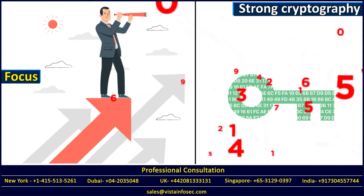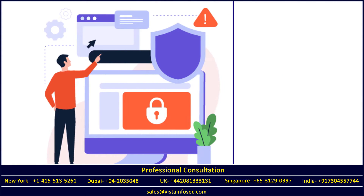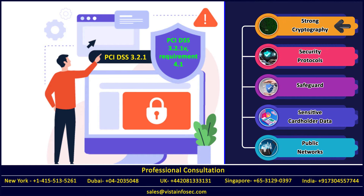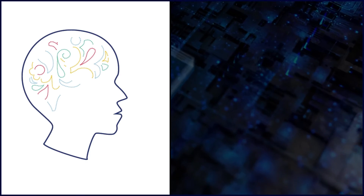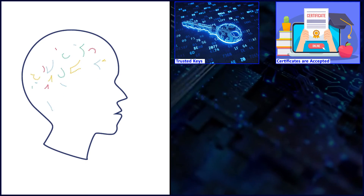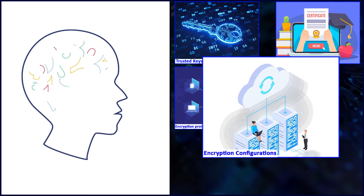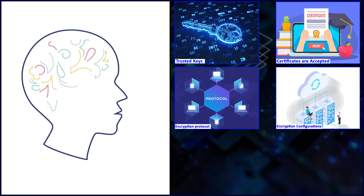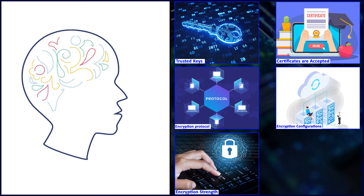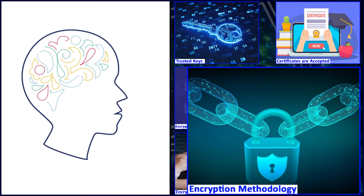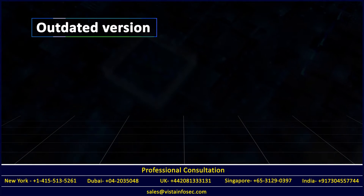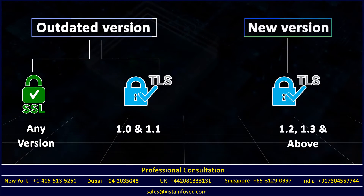In PCI DSS 3.2.1, requirement 4.1 highlights the need for strong cryptography and security protocols to safeguard sensitive cardholder data during transmission over public networks. It requires that only trusted keys and certificates are accepted, that the protocol in use only supports secure versions or configurations, and that encryption strength is appropriate for the encryption methodology in use.